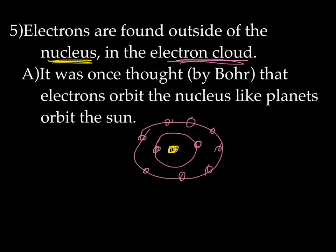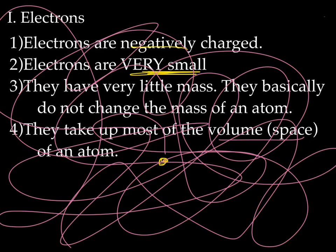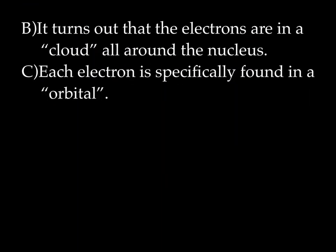You'll see why later that we have a tendency to draw this particular model that Bohr came up with versus the real model, because the real model is very difficult. It turns out that this is not true, but we'll still use it. It turns out that electrons are in a cloud all around the nucleus, but they're actually a bit more organized than that — they're in these things called orbitals.